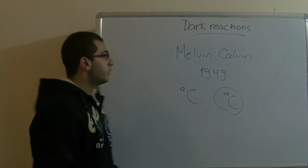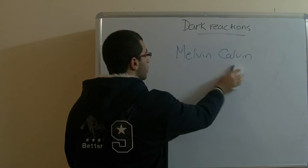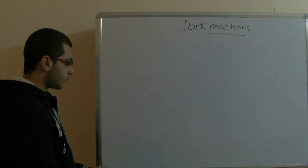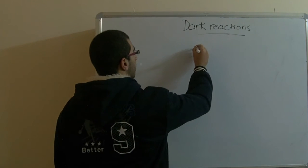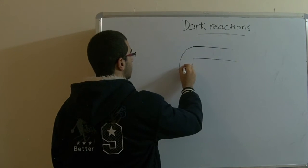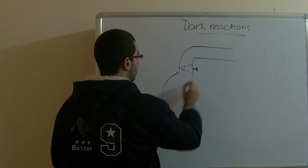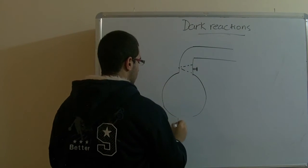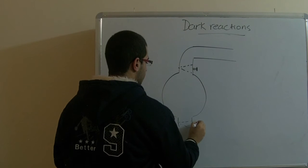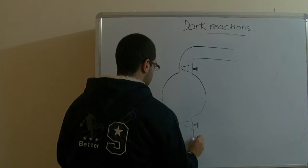He used this radioactive carbon to testify for the results that we obtained here and to show what the first product of the dark reactions is. So he made an apparatus that looked like this.